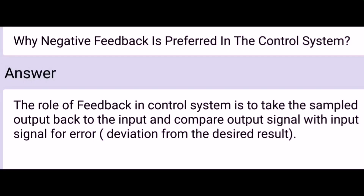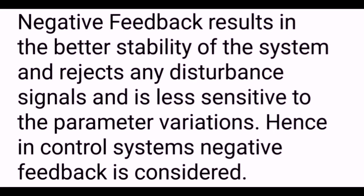Why is negative feedback preferred in control systems? The role of feedback in a control system is to take the sampled output back to the input and compare the output signal with the input signal for error, like deviation from the desired results. Negative feedback results in better stability of the system, rejects any disturbance signals, and is less sensitive to parameter variations. Hence, in control systems, negative feedback is considered.